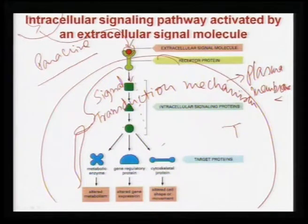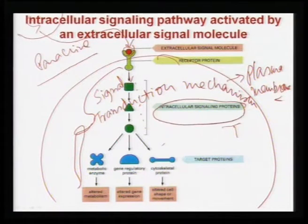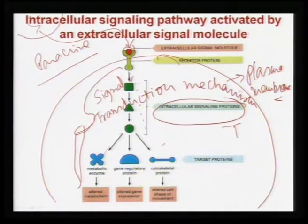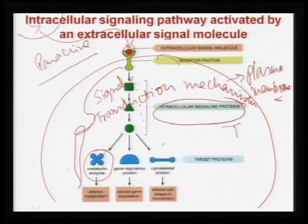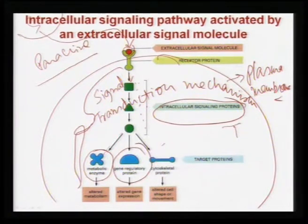Signal transduction mechanism means: once the receptor proteins are activated in the target cell, they will activate a few other intracellular signaling proteins. These proteins are designated as different symbols — square, triangle, circular — meaning they are essentially different types of proteins. These different intracellular signaling proteins are being activated, and the net result is that they can ultimately act on the target protein, modifying the metabolic activity. This means protein molecules will be synthesized at the ribosome.